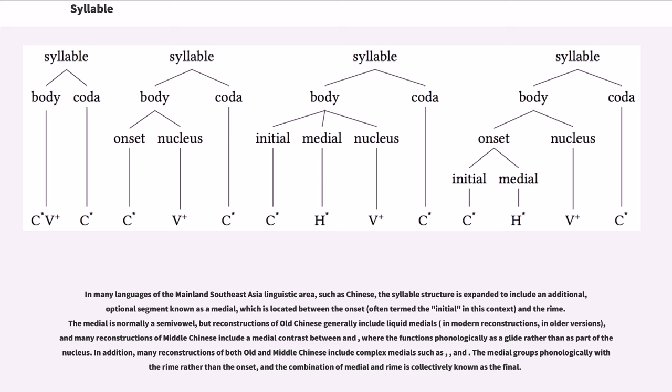The medial is normally a semi-vowel, but reconstructions of Old Chinese generally include liquid medials, and many reconstructions of Middle Chinese include a medial contrast between glides, where the functions phonologically as a glide rather than as part of the nucleus. In addition, many reconstructions of both Old and Middle Chinese include complex medials. The medial groups phonologically with the rhyme rather than the onset, and the combination of medial and rhyme is collectively known as the final.